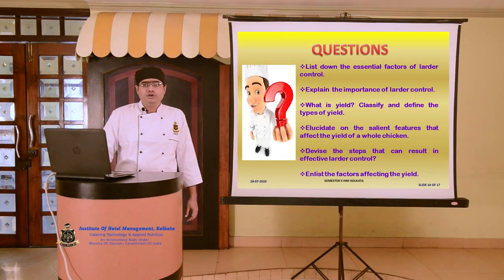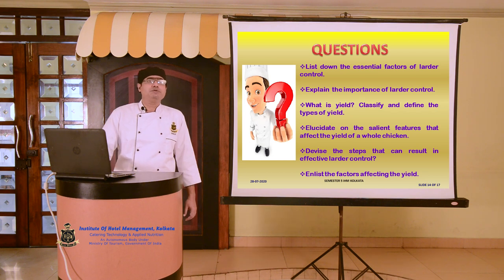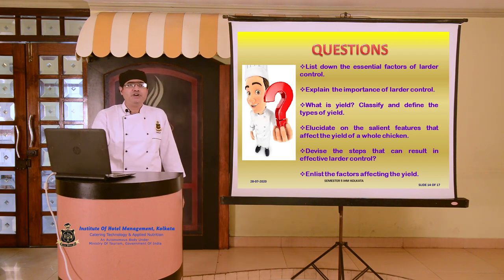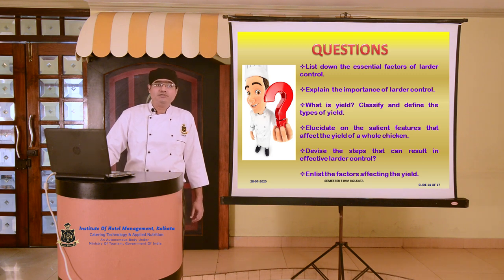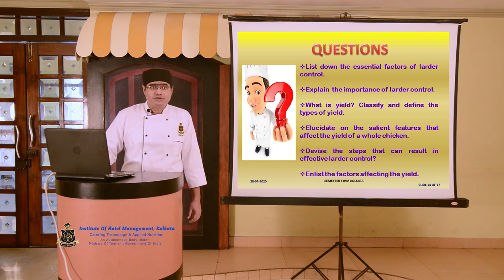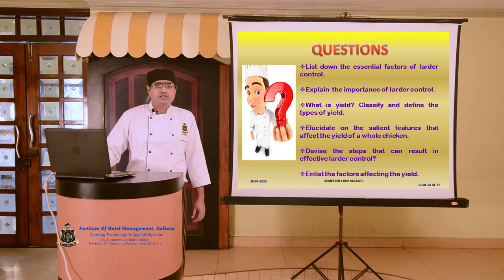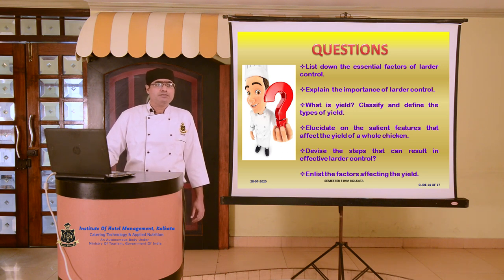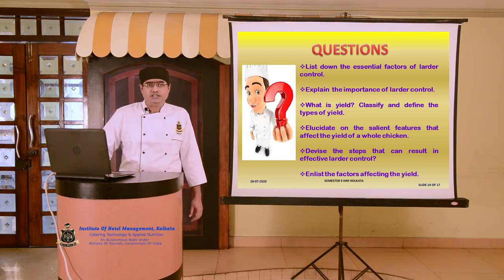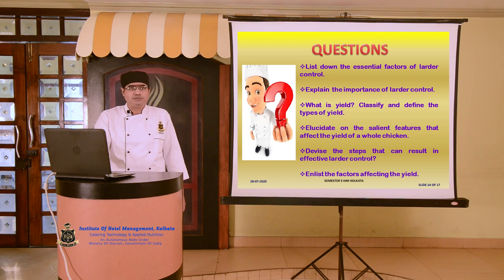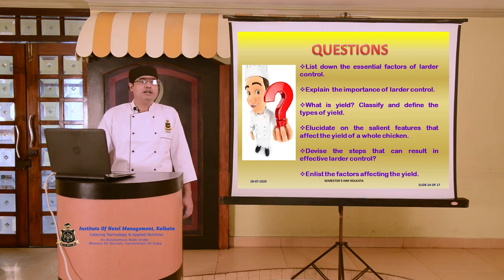Focusing on what we have learnt from this session, there can be certain important questions: List down the essential factors of larder control; explain the importance of larder control; what is yield; classify and define the types of yield; elucidate on salient features that affect the yield of a whole chicken; devise the steps that can result in effective larder control; enlist the factors affecting yield. These questions can easily be answered if you have gained insight into what has been covered in this session and the notes already provided.